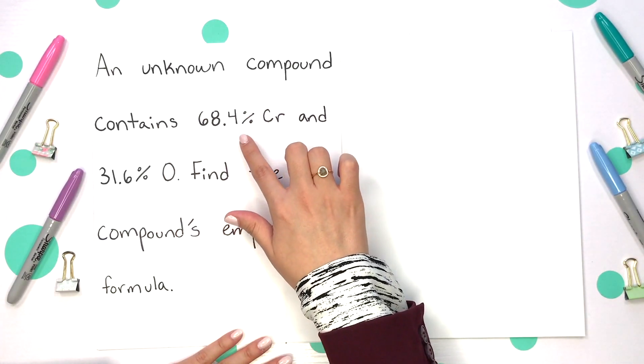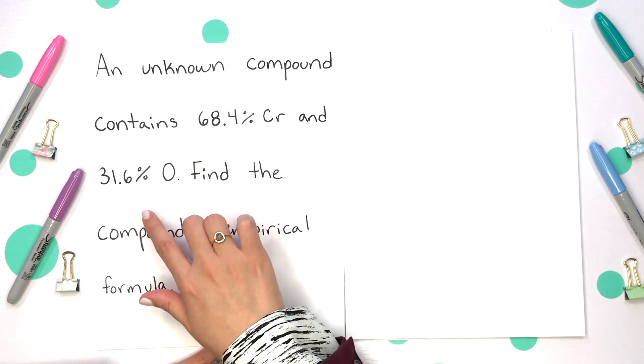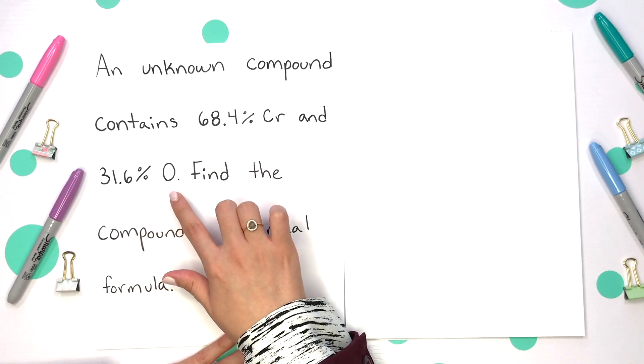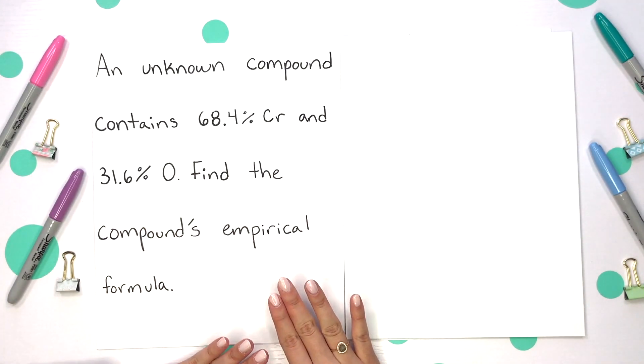An unknown compound contains 68.4% of chromium and 31.6% of oxygen. Find the compound's empirical formula.